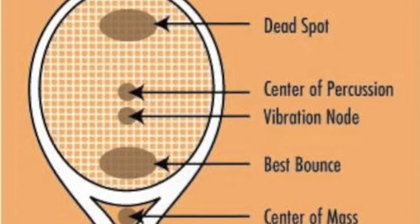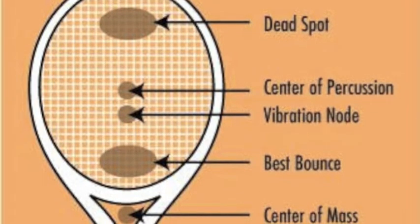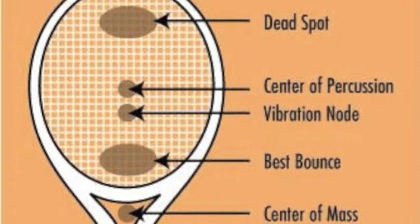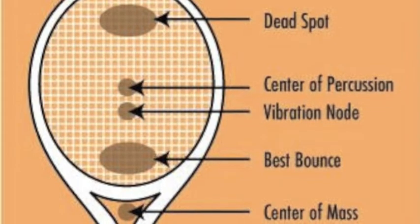Rolling is the summation of translation and rotation. By hitting at the COP, the racket will roll in our hands, so we only feel a small amount of force.